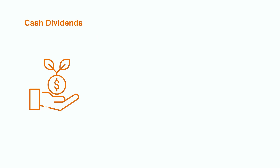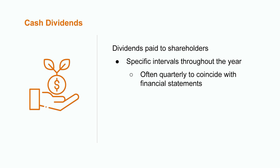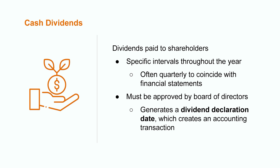One of the most common types of corporate distributions are dividends. Dividends usually refer to cash that a corporation pays to its shareholders at specific intervals throughout the year. Many companies choose to pay dividends quarterly to coincide with the release of their quarterly financial statements, though dividends can be paid at other times as well. In order for dividends to be paid out, the board of directors must go through an approval process where they review the current financial status of the organization and determine whether to declare the dividend. This dividend declaration date is extremely important in the accounting world, as this is when the obligation gets locked in, resulting in an accounting transaction which impacts the financial statements. If you're an investor, you're also watching this declaration date very closely, as this particular date can be the difference between more money in your pocket for that month.